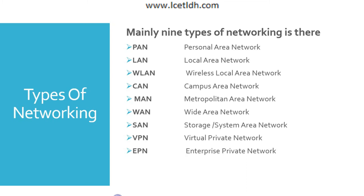Next we have the Local Area Network (LAN). LANs are the most frequently discussed, most common, and one of the simplest types of networks. LANs connect groups of computers and low-voltage devices together across short distances — like within a building or between two or three buildings in close proximity — to share information and resources. Enterprises typically manage and maintain LANs using routers, and LANs can connect to Wide Area Networks.